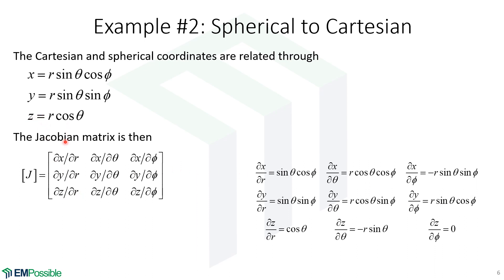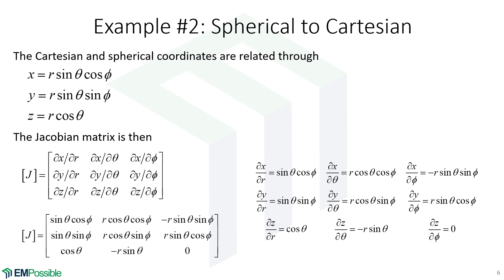Last line: Z equals R cosine theta. The partial derivative with respect to R is just cosine theta. The partial derivative with respect to theta: the derivative of cosine is negative sine, so we have negative R sine theta. The partial derivative with respect to phi: there is no phi, so that's zero. Throwing that back into the Jacobian gives us the Jacobian for the spherical to Cartesian transform.